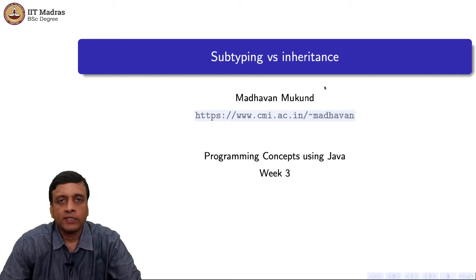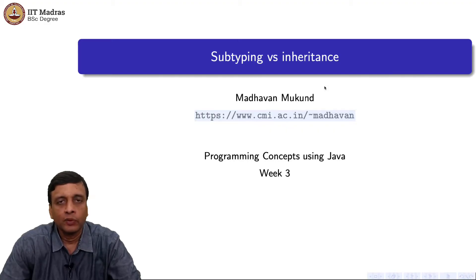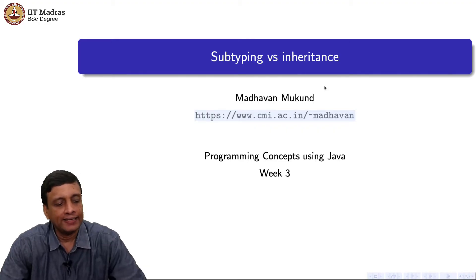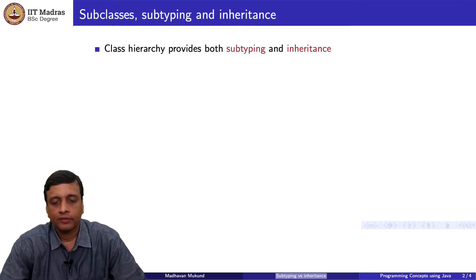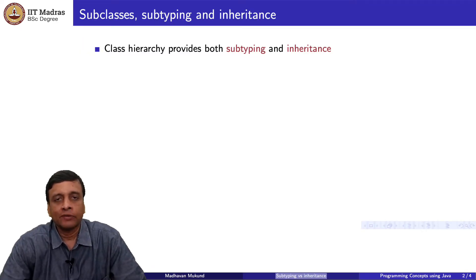Now that we have seen what the Java class hierarchy looks like, let us revisit a topic we saw in the first week, which is the difference between two concepts in object-oriented programming called subtyping and inheritance. The class hierarchy that we have defined in Java, where we can extend classes in a tree, provides both these properties — both subtyping and inheritance.